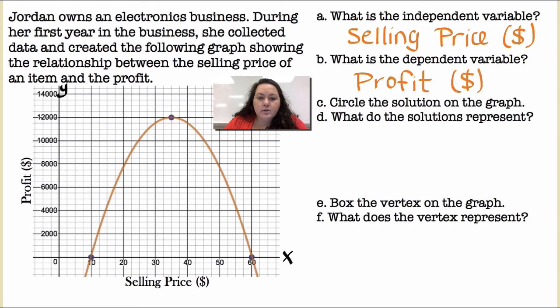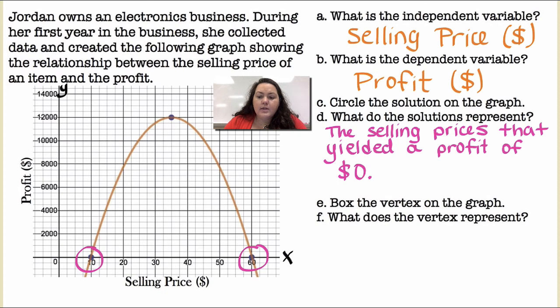Circle the solutions on the graph. Well, my solutions are where it crosses the x-axis. So at 10 and 60, what do those solutions represent? Okay, well, right here on my x-axis, that means my profit is $0. Okay, so the selling price that yields a profit of $0. So if I sell it for $10, I'm going to make nothing. Probably because it costs too much to make. And if I sell it for $60, I'm going to make nothing. Probably because too many people are not going to buy it.